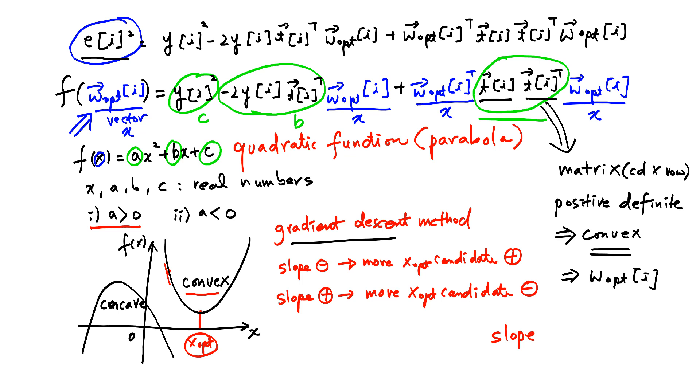And for that, we need to find out the slope, which is d e of i squared d w-opt of i. We are differentiating e of i squared with respect to w-opt of i, which is a vector. So I need to also talk about this matrix vector differentiation a little bit in order to find this slope.